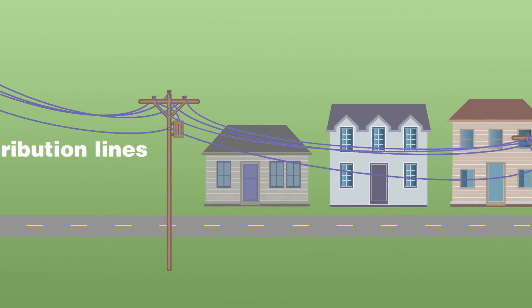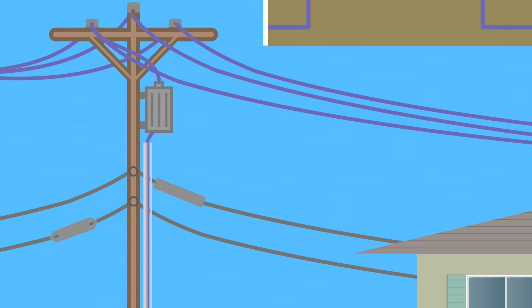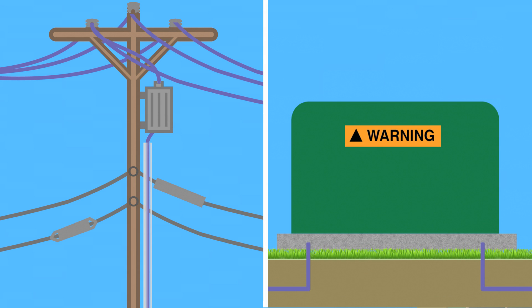These lines are owned and maintained by your electric cooperative, and they can either be located on poles overhead, or they can be buried underground.